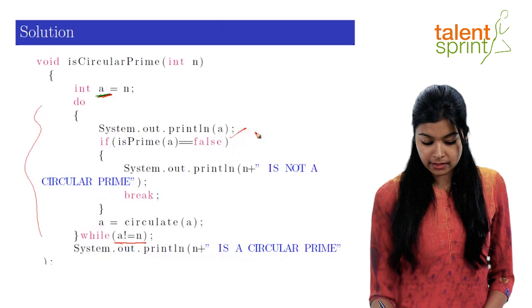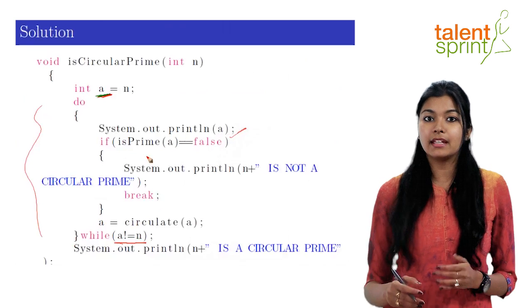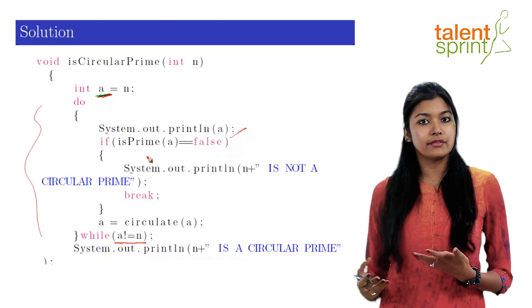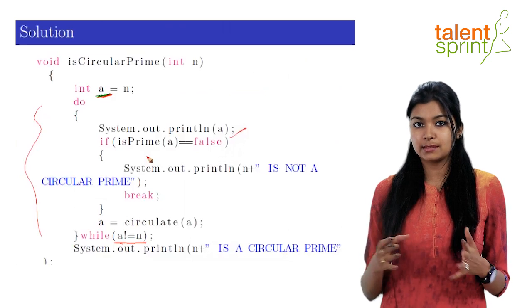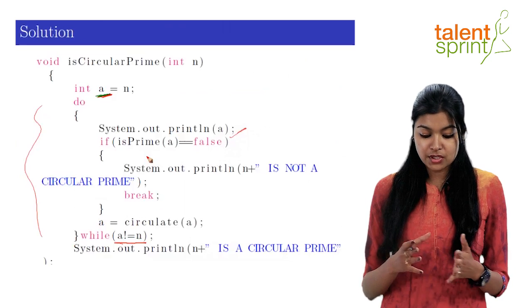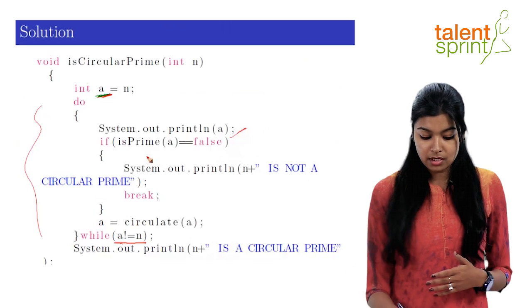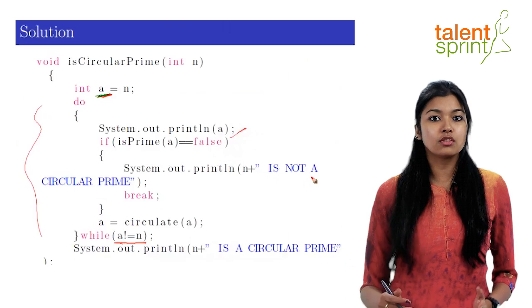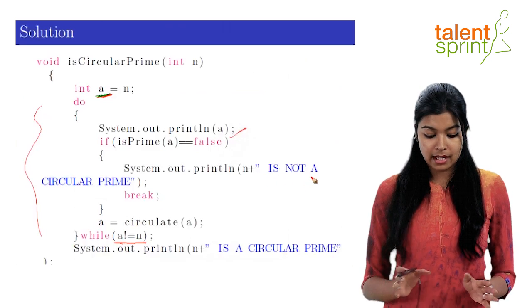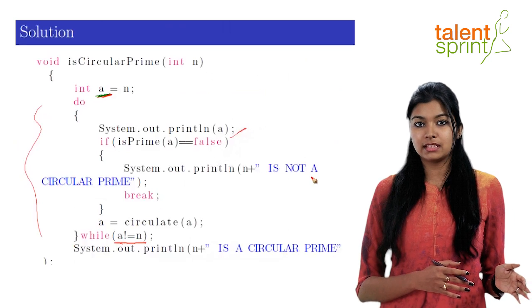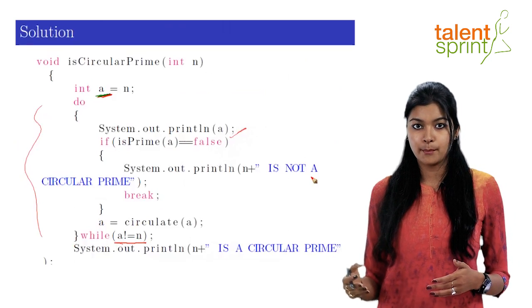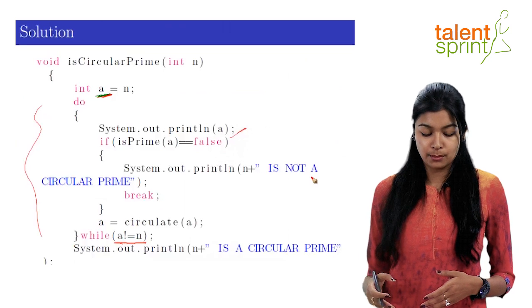So we take the number, we print a, we check if a is prime or not. Again, isPrime function we have done before. So I'm not going to explain it as part of this video. So we check if a is prime or not. If a is not a prime number, we can say that n is not a circular prime. And we can just break out of the loop at this very point of time. We don't need to go through all the iterations.